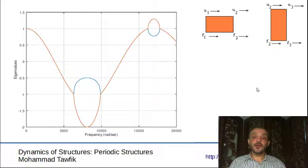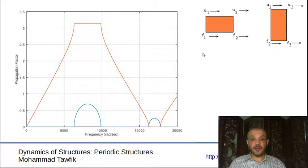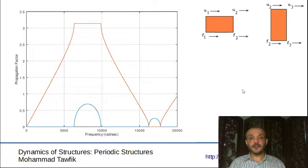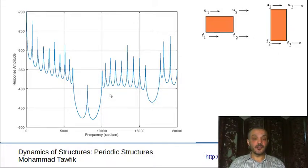If we transform this into the coefficient of propagation, you can see the first stop band is almost in the same place but a little bit shifted, and another stop band is appearing, followed by a pass band. Since we already know that the higher frequencies will not give us accurate enough results, we will focus only on the lower frequencies. If we now obtain the response of a periodic bar consisting of 10 cells, we can see again very clearly the drop in the amplitude of the vibration response corresponding to the first stop band, and even a significant drop corresponding to the second stop band.